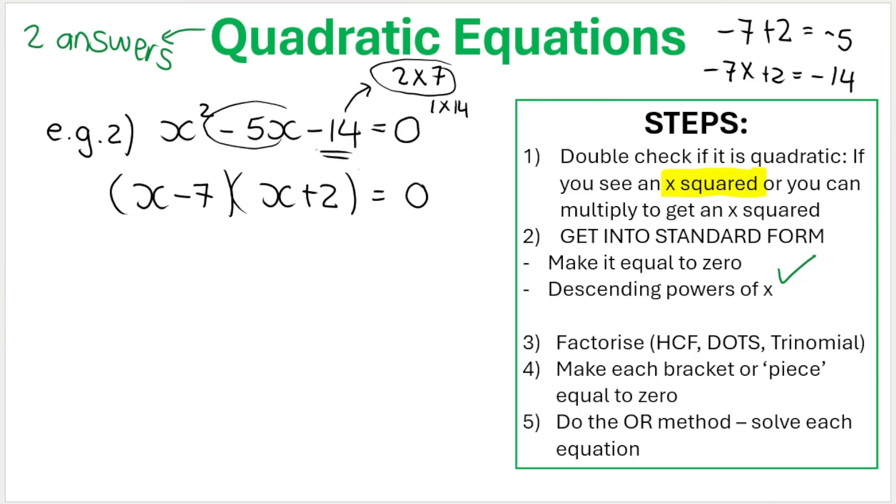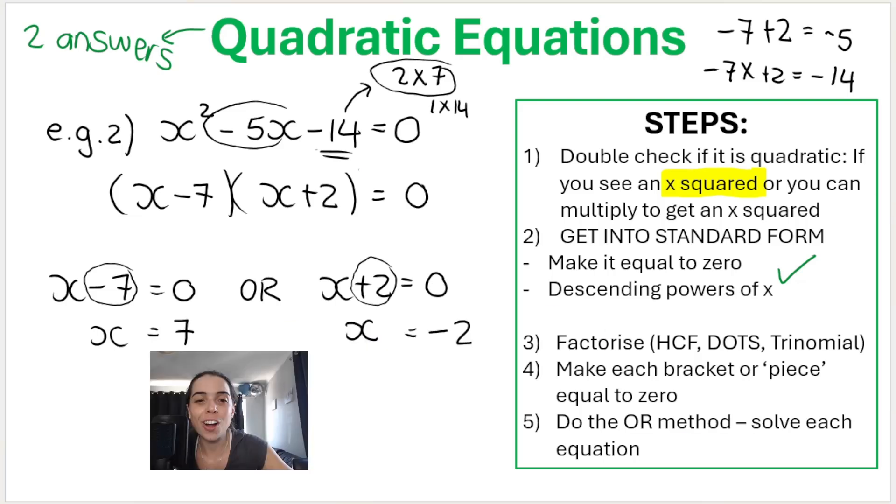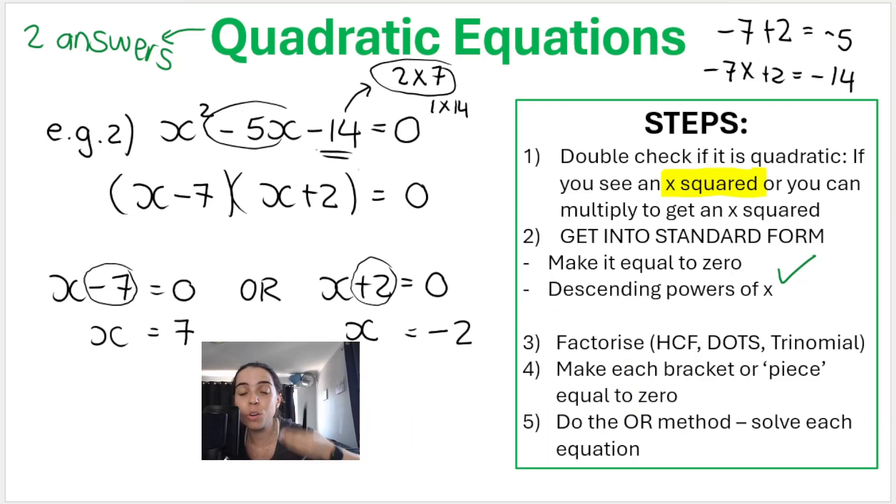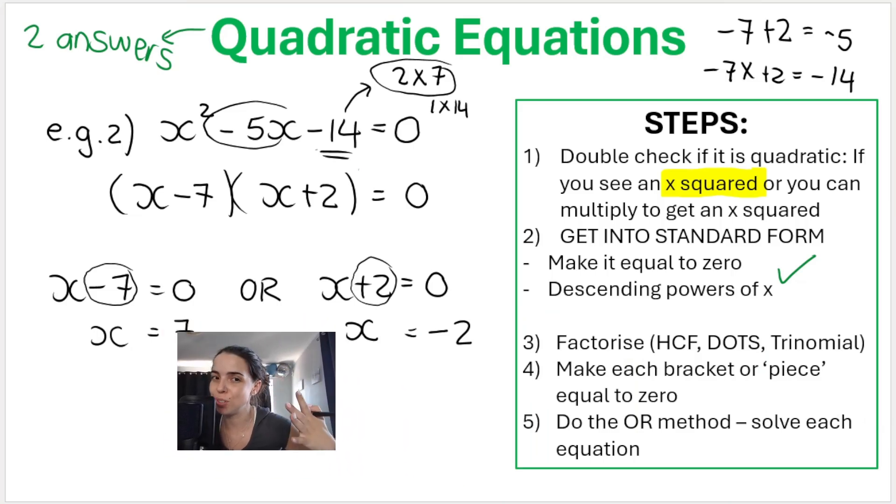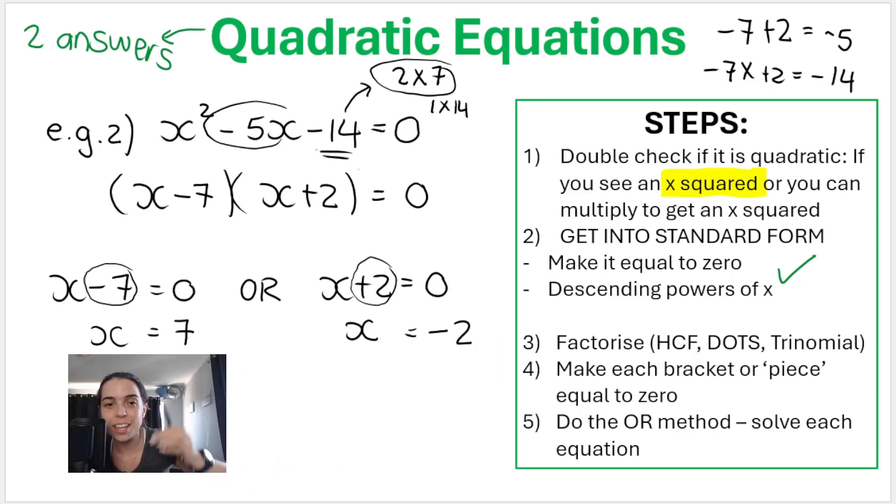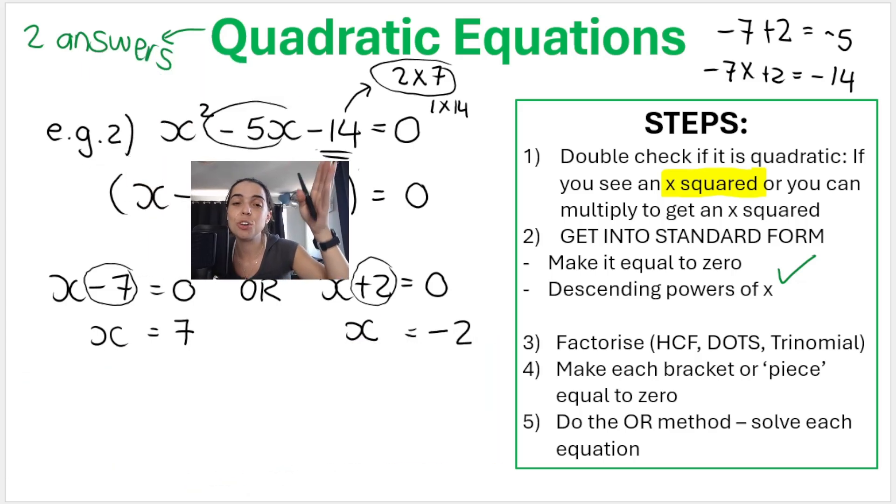So now that I've factorized it, I've got two brackets there and there. We're going to take each piece, each little bracket, and make it equal to 0. So you're going to say x minus 7 is equal to 0 or put a big O in the middle, x plus 2 is equal to 0. So here, inverse operation opposite of subtracting 7 is adding 7. So 0 plus 7 is 7. Here, inverse operation of plus 2, opposite of plus 2, is minus 2. 0 minus 2 is negative 2. Again, two answers. They both need to be there in order for you to get the marks. The OR doesn't mean that you can choose which answer to give. You must give both answers. Both of these answers will make this equation over here true.